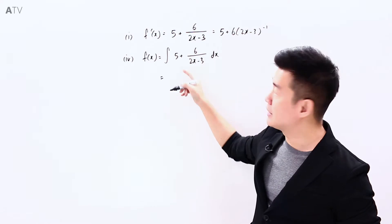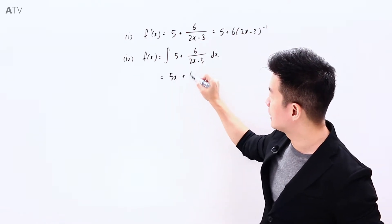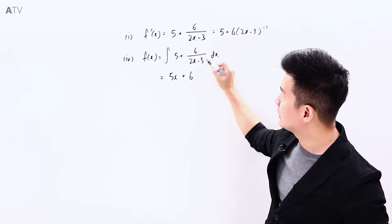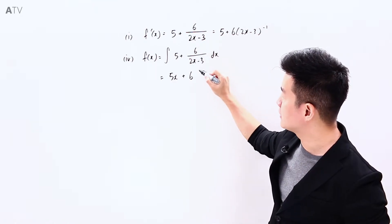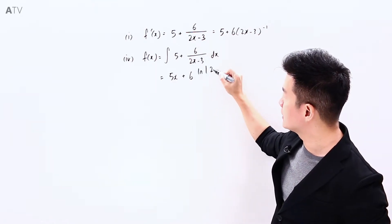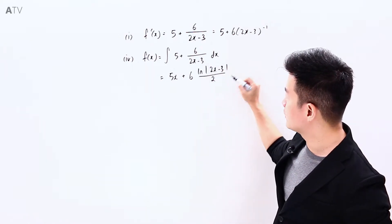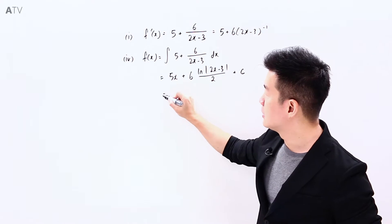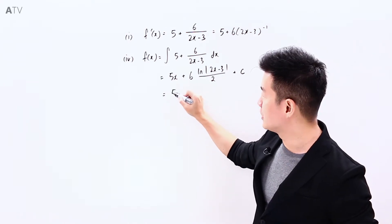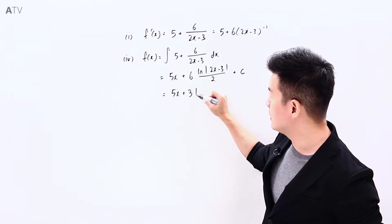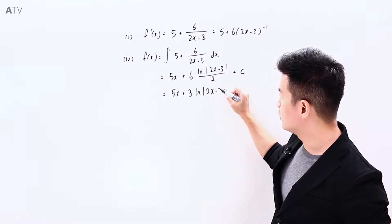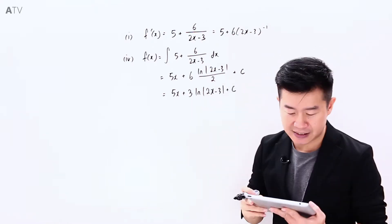Which means that we will have 5x, then plus 6 times the integral of 1 over 2x minus 3, which will be ln of modulus of 2x minus 3 divided by the coefficient of x which is 2, plus c. So fx is going to be 5x plus 3 ln modulus of 2x minus 3 plus c.